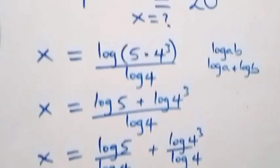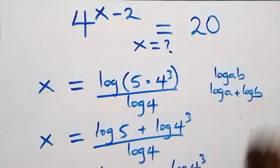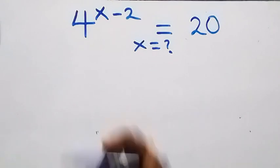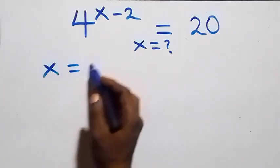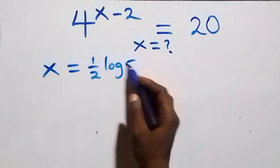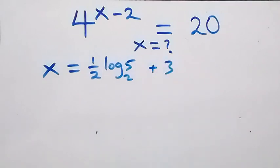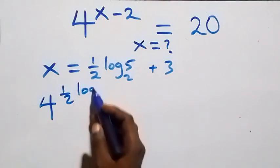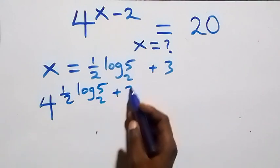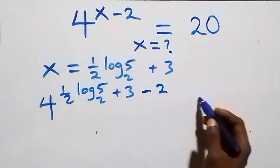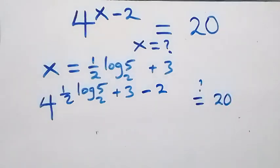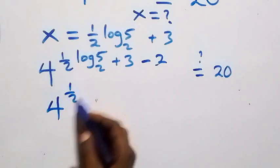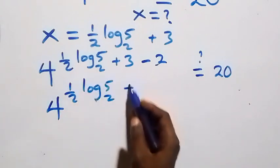Now let's check that this satisfies the given problem. We substitute x equals one half log base 2 of 5, plus 3 back into the original equation, giving 4 raised to the power of one half log base 2 of 5 plus 3, minus 2, which simplifies to the exponent one half log base 2 of 5 plus 1.